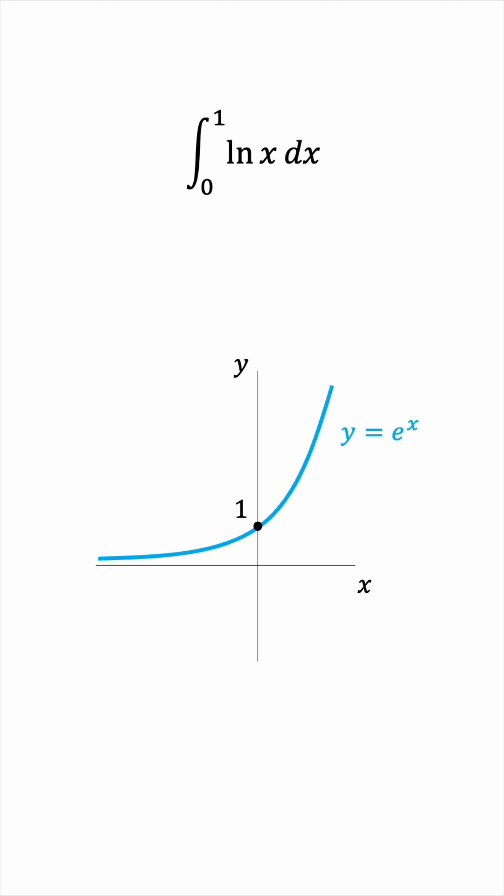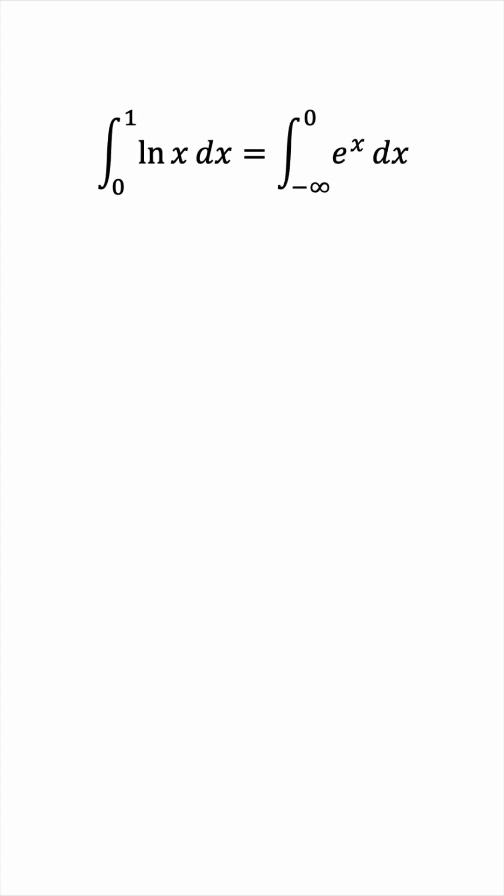And the area we're trying to find is precisely this area, the area under e to the x from negative infinity to 0. So we can find this area by taking an easier integral, which is the integral from negative infinity to 0 of e to the x dx.